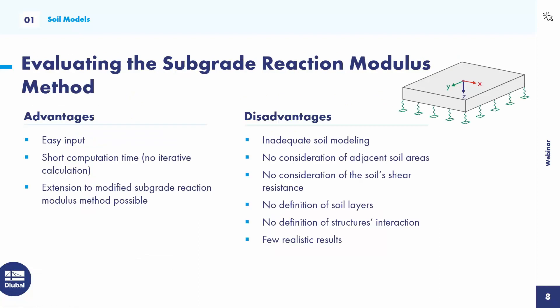To the evaluation of the subgrade reaction modulus method: advantages are easy input, short computation time because there is no iterative calculation, and the possibility to extend to the modified subgrade reaction modulus method. Disadvantages are inadequate soil modeling — it's not possible to consider adjacent soil areas, soil shear resistance, soil layers, or structure interaction. There are few realistic results. In my opinion, the subgrade reaction modulus method no longer meets today's requirements and is contrary to increasingly precise structural analysis.